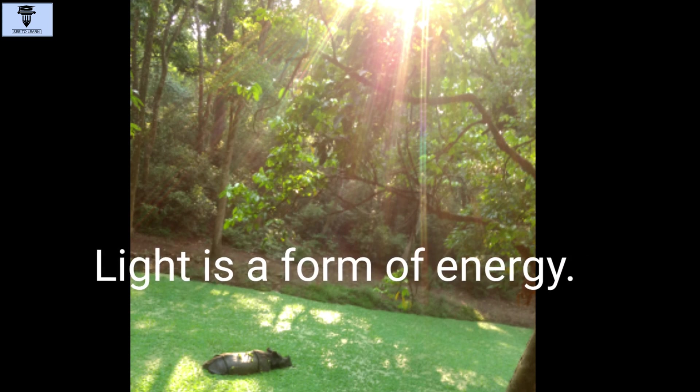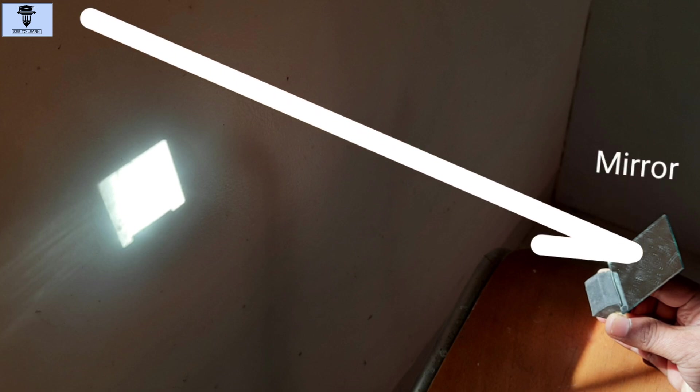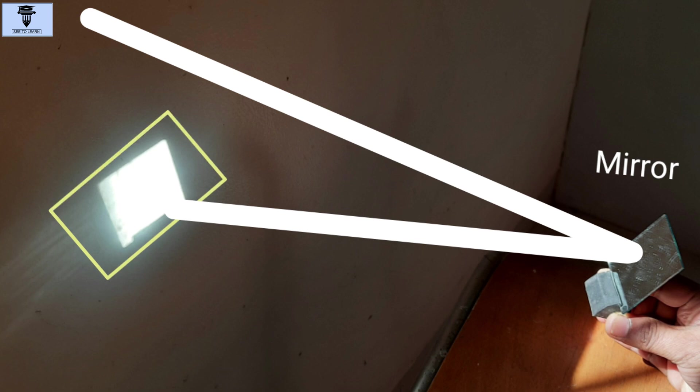Light is a form of energy. See, here I am holding a mirror in the path of light. The light bounces off from the surface of the mirror, which you can see on the wall.